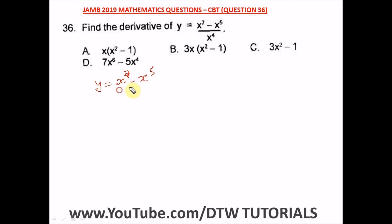Let's simplify this, let's break this down. So here we have x raised to the power 7 divided by x raised to the power 4 minus x raised to the power 5 divided by x raised to the power 4.